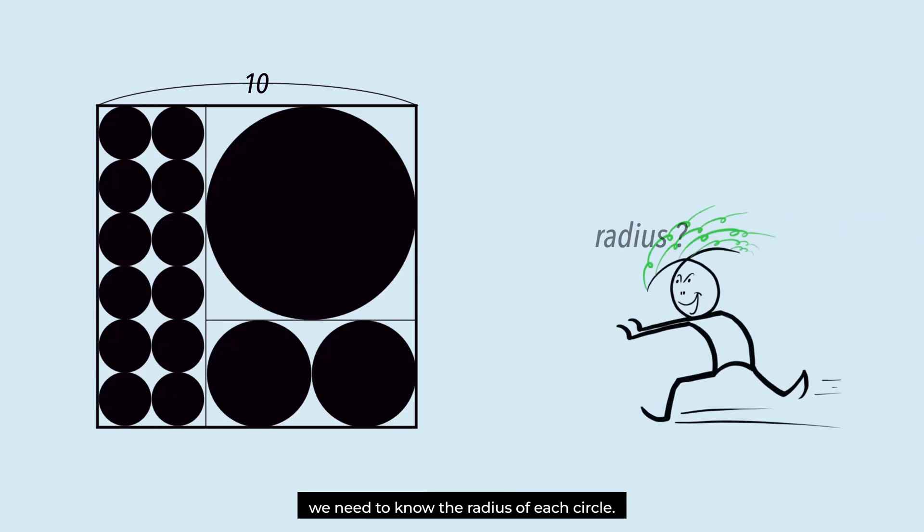To do this, we need to know the radius of each circle. Let's call the radius of the smallest circle x. The radius of the next circle is 2x. The radius of the largest circle is 4x.